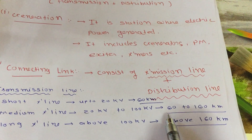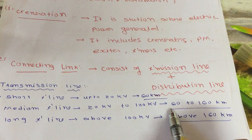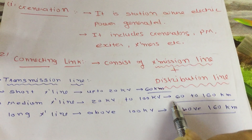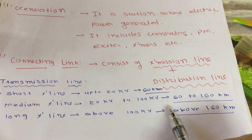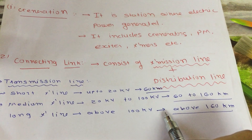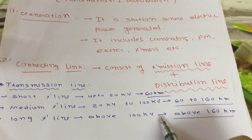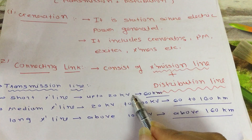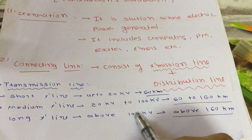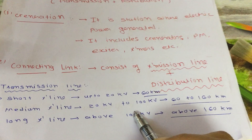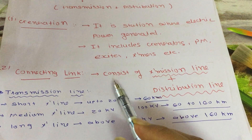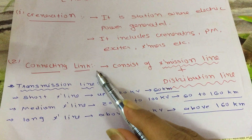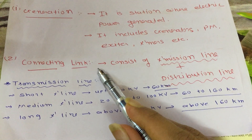If classified by length, transmission line up to 60 km is considered short, 60 km to 160 km is medium, and above 160 km is long transmission line. This is the classification of transmission line, which comes under the connecting link section.